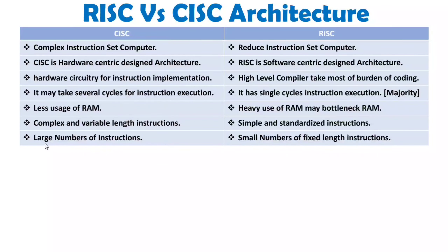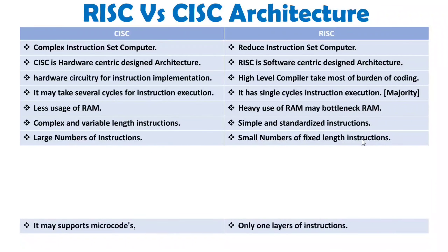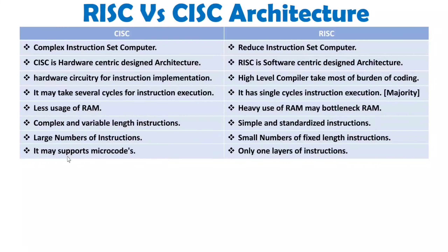When we talk about number of instructions, with CISC a large number of instruction varieties are available. With RISC, a small number of instructions are available and they are mostly fixed-length — I can say up to 95% of instructions have fixed length. CISC architecture supports microcode, where instructions are executed by subroutines, as seen in 8085 and 8086. But with RISC architecture, there is only one layer of instruction execution and it does not support microcode.